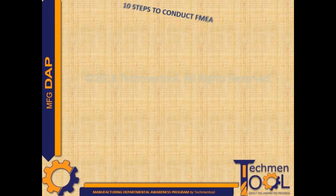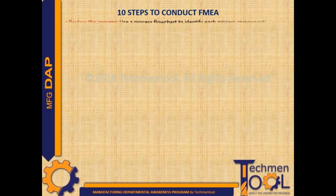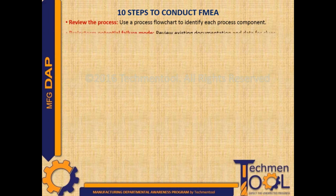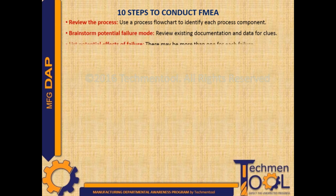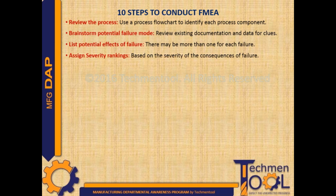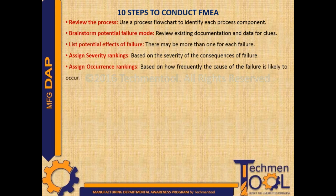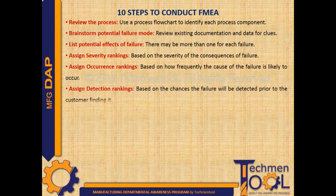There are a total of 10 steps to conduct FMEA. Step 1: Review the process — use a process flowchart to identify each process component. Step 2: Brainstorm potential failure modes — review existing documentation and data for clues. Step 3: List potential effects of failure; there may be more than one for each failure. Step 4: Assign severity rankings based on the severity of the consequences of failure. Step 5: Assign occurrence rankings based on how frequently the cause of the failure is likely to occur.